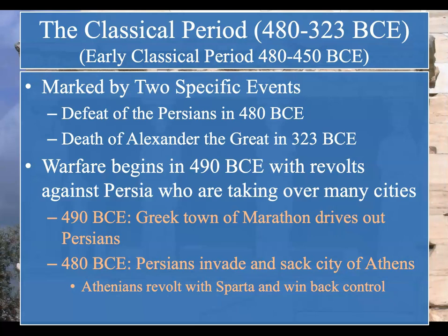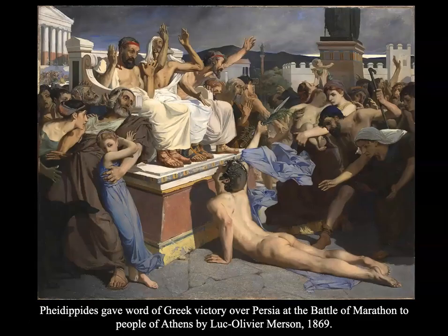Warfare begins in 490 BCE with revolts against Persia, who are trying to take over many cities in ancient Greece. In 490 BCE, the Greek town of Marathon drives out the Persians. In 480, the Persians invade and sack the city of Athens. Eventually the Athenians revolt with Sparta and win back control, leading to the rebuilding program by Pericles. As a side note, marathons are named because a man ran 26 miles to report the victory at Marathon, then fell over from exhaustion and died — hence the 26-mile race.